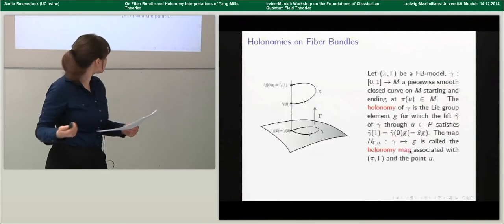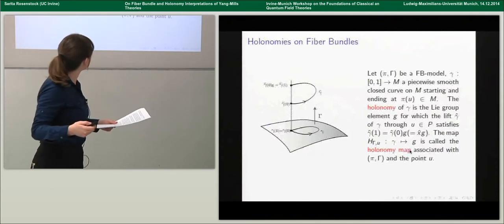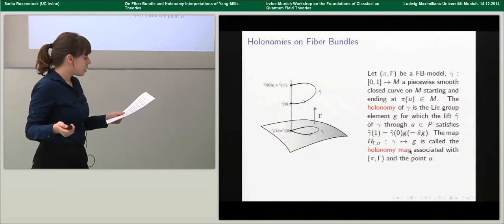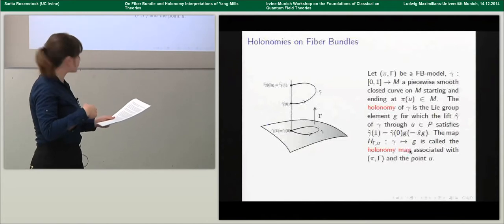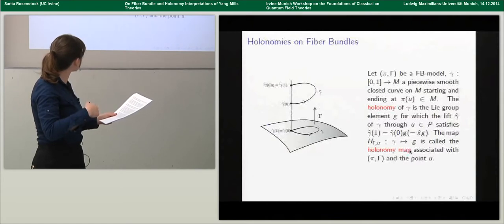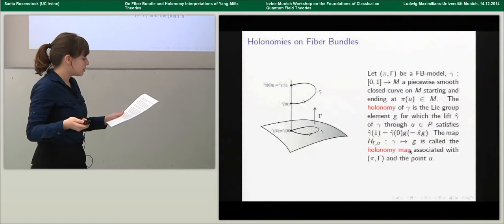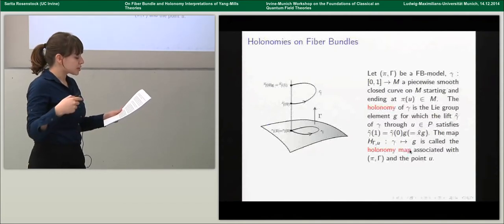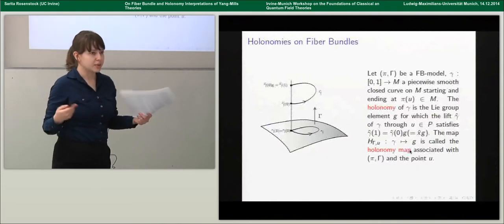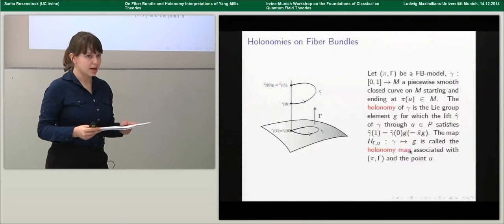To look at the holonomy interpretation, we need to define holonomy. Given a fiber bundle model and a piecewise smooth closed curve on spacetime, the holonomy of that curve — relative to the connection through a given point in the fiber over the base point of the closed curve — is the element g of our Lie group such that if you lift the curve to the initial point you've chosen, the final point is related to that initial point by g. It's important to note that if you lift a closed curve, it isn't necessarily going to start and end at the same point. When it does, that corresponds to a flat connection. So the holonomies encode the sense in which a connection is curved or fails to be flat.